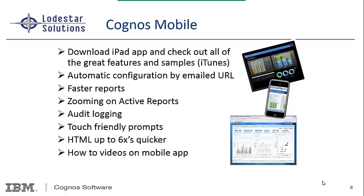Cognos Mobile saw some improvements with the new version of Express. There's an app on iTunes that you can download, and you can automatically configure it via an emailed URL. It gives you faster reports and zooming on active reports, some audit logging, touch-friendly prompts, and HTML rendering up to six times quicker. There are also how-to videos on the mobile app. So concentration was definitely put on mobile, utilizing the active reports and the visualizations.